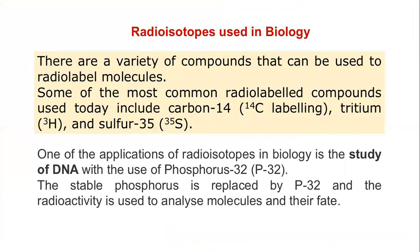There are a variety of compounds that can be used for radiolabelling biomolecules. Some of the very commonly used molecules for radiolabelling include carbon-14, which we make use of in carbon labelling and carbon dating, then we have tritium, and then sulfur-35. So these are the three major compounds being used for radiolabelling.